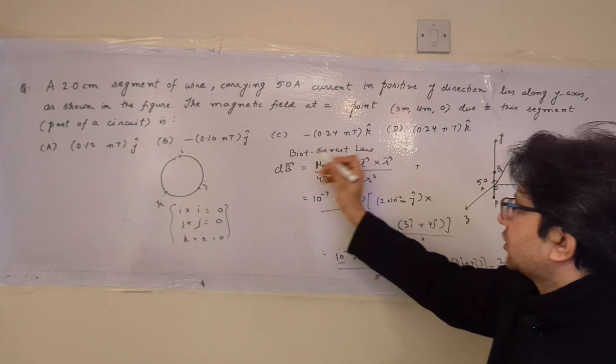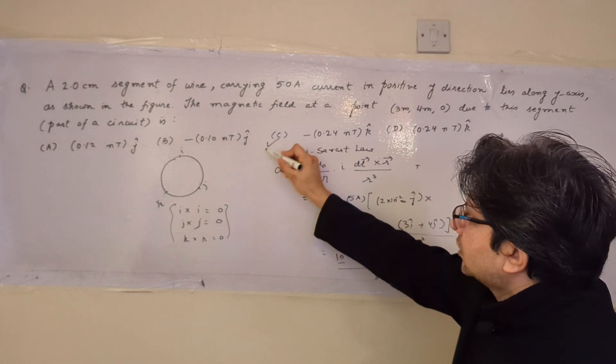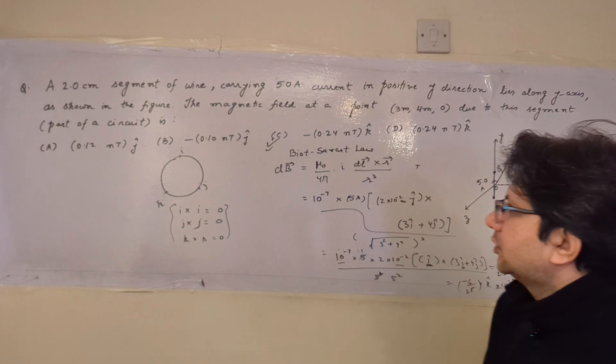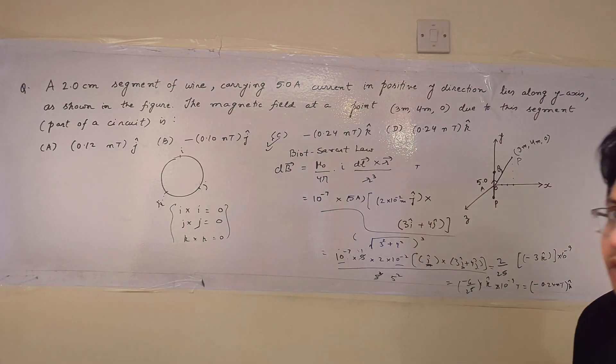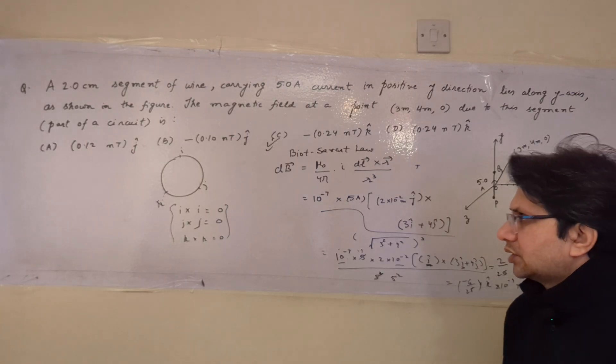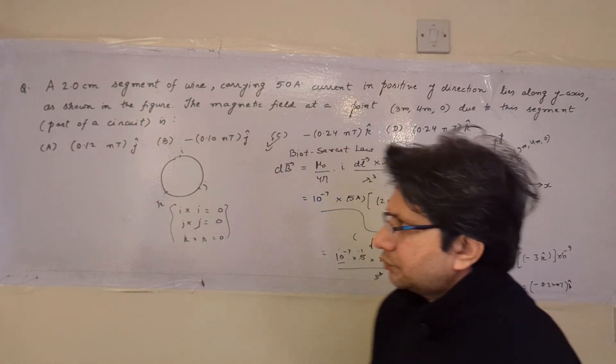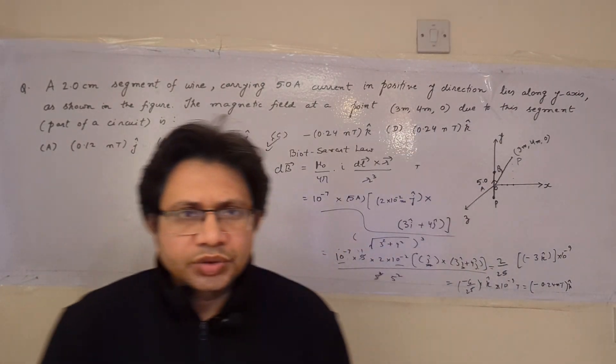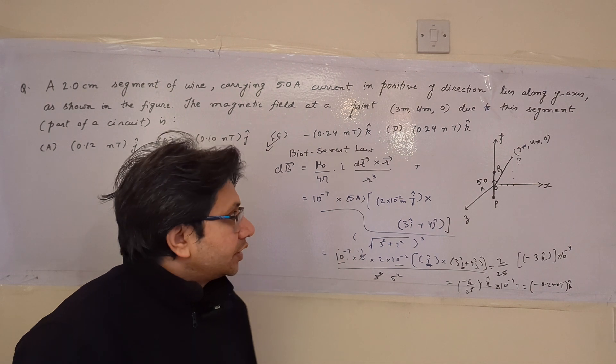Minus 0.24 nanotesla k̂ is the answer — that is option C. So option C is the correct answer.